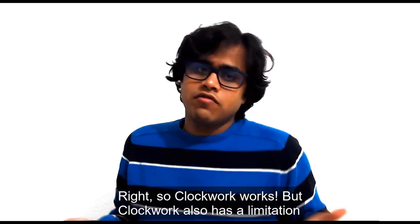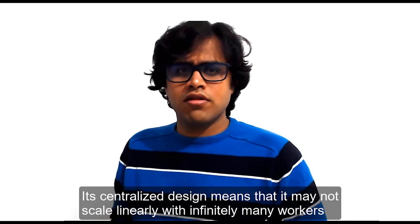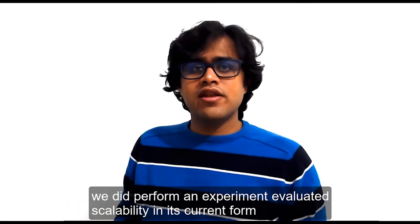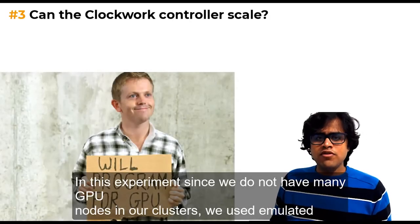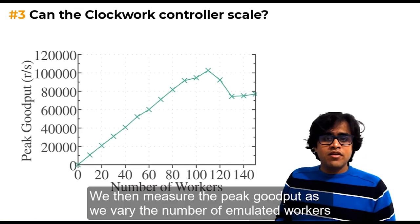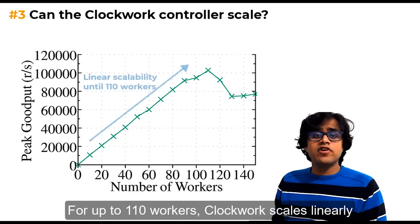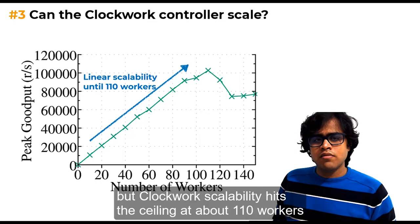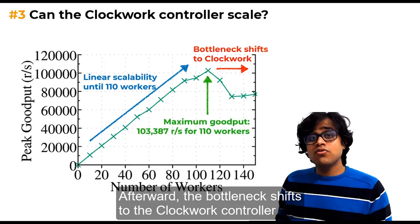Right, so Clockwork works. But Clockwork also has a limitation. Its centralized design means that it may not scale linearly with infinitely many workers. And although we have not optimized Clockwork for scalability yet, we did perform an experiment to evaluate its scalability in its current form. In this experiment, since we do not have many GPU nodes in our clusters, we used emulated workers. But from the controller's vantage point, this did not change anything. We then measure the peak goodput as we vary the number of emulated workers. For up to 110 workers, Clockwork scales linearly. The peak goodput in this region is only limited by the worker's utilization. But Clockwork scalability hits a ceiling at about 110 workers, after which the bottleneck shifts to the Clockwork controller.